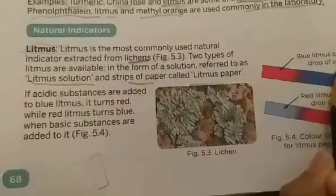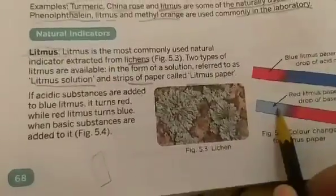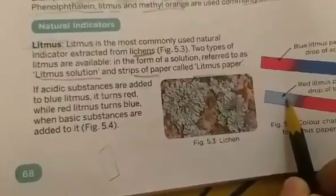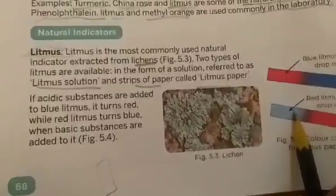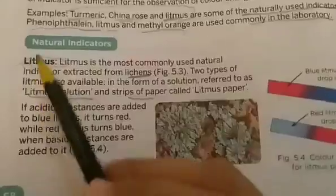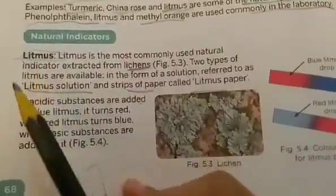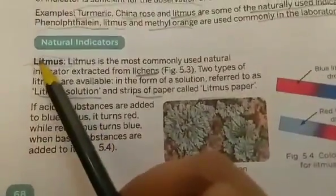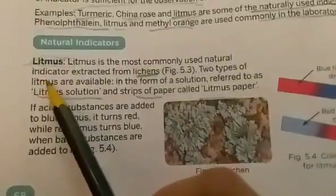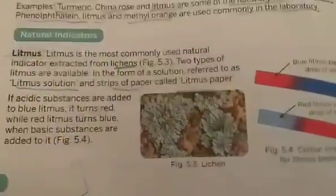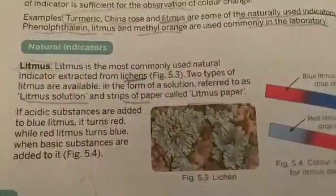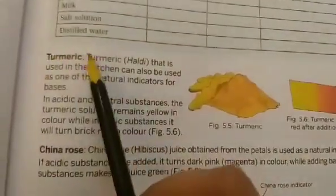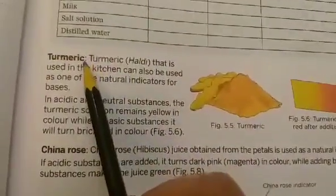If I dip this blue litmus into a basic substance, its color will not change. But if I dip a red litmus paper into a basic substance, being a basic substance it will turn the red litmus paper into blue. So litmus strips and litmus solution indicate acids with red color and bases with blue color, helping us identify which chemical is an acid and which is a base.